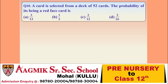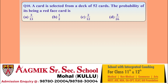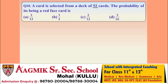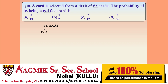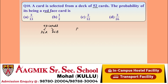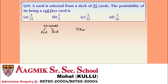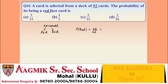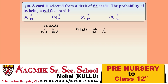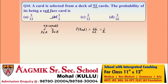Question 10: a card is selected from a deck of 52 cards; find the probability of it being a red card. In a deck of 52 cards, 26 are red and 26 are black. The required probability = 26/52 = 1/2. Option B is correct.